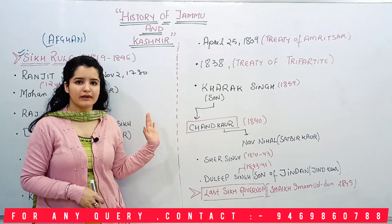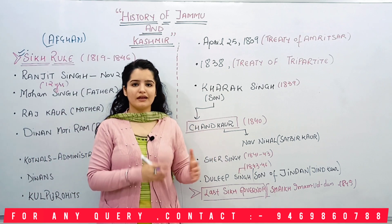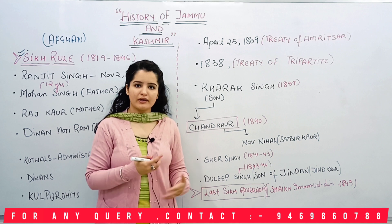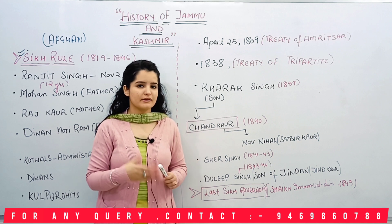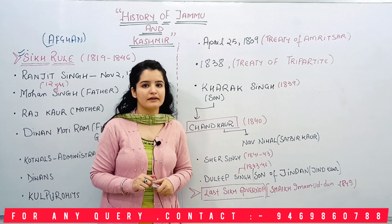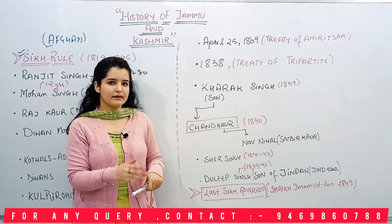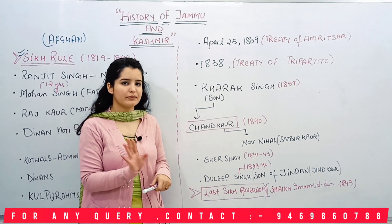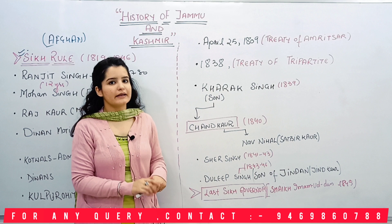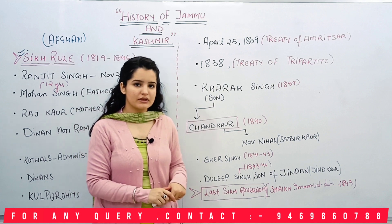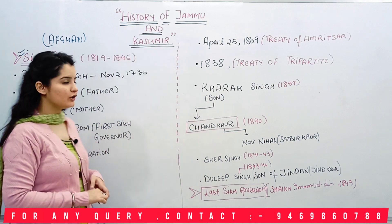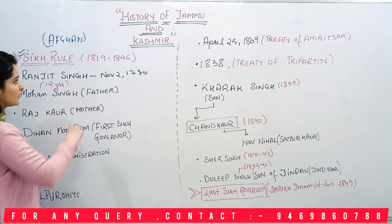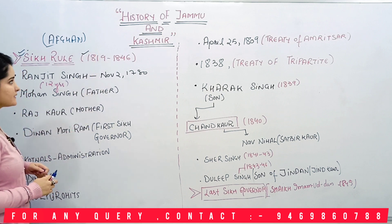Watch this video series from the beginning, because in the history of Jammu and Kashmir, if you see a random video without the earlier lectures, you will not understand anything. Ranjit Singh invaded Kashmir two times — the first time during Timur's time, which failed. The second time he was successful against Ayub Khan. So our Sikh rule started in 1819.